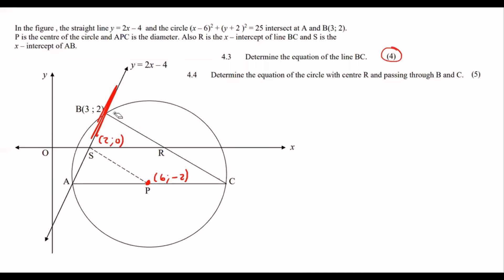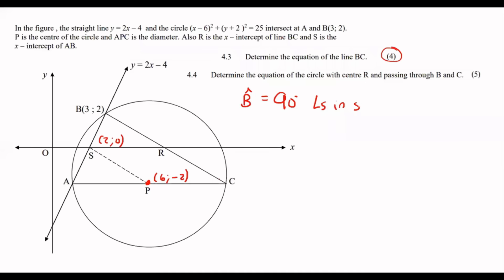There's a question about whether the lines are parallel — but they didn't tell us that these lines are parallel, so we wouldn't get the marks for using that. They didn't tell us it's parallel so we couldn't use that. But this angle IS 90 degrees, so we would have to say in the exam that angle B is equal to 90 degrees, because angles in a semicircle.